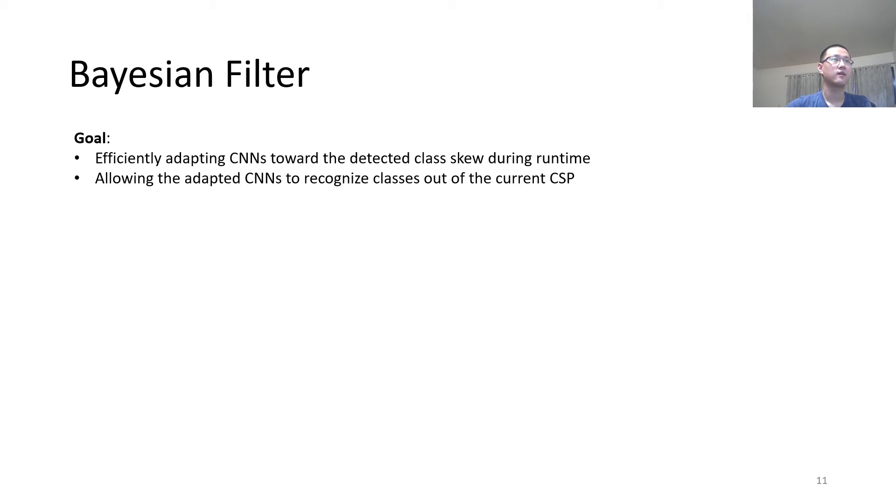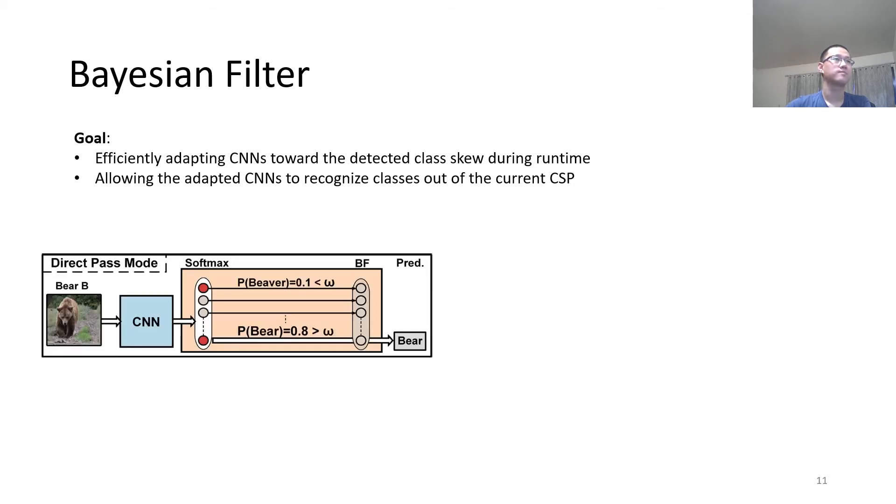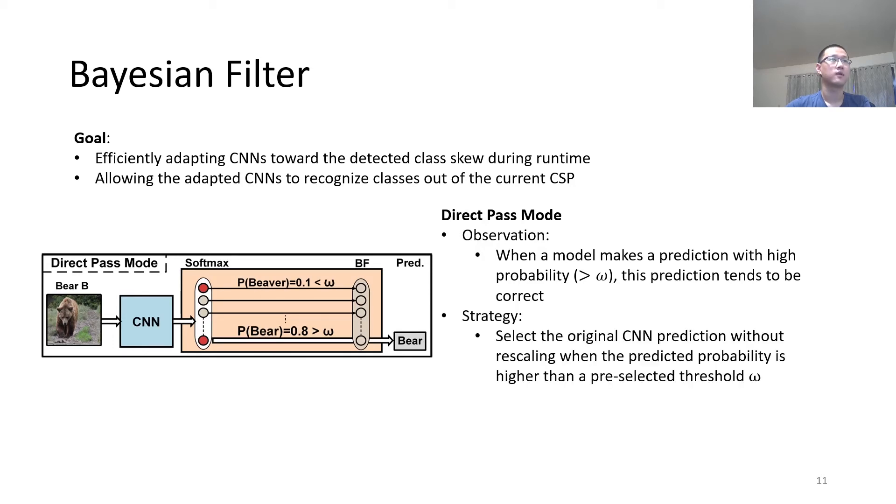The second technique is a direct class mode. We observe that when a model makes a prediction with higher probability, this prediction tends to be correct. In this case, our strategy is to select the original CNN prediction without recalculating when the predicted probability is higher than a pre-selected threshold. Formally, we formulate our Bayesian filter with the following formula.